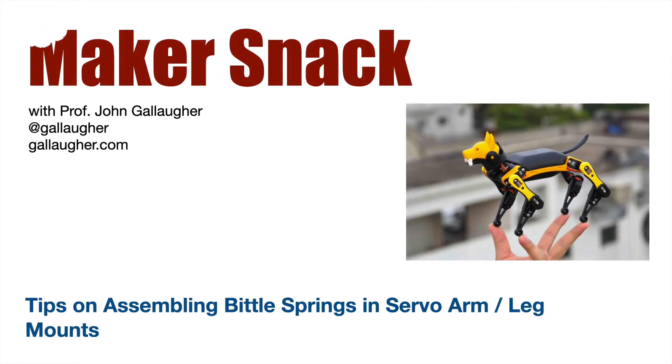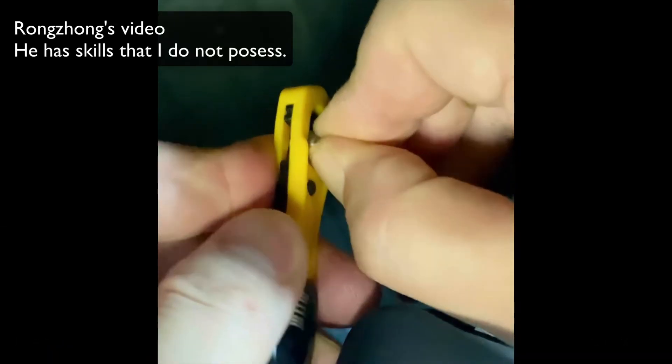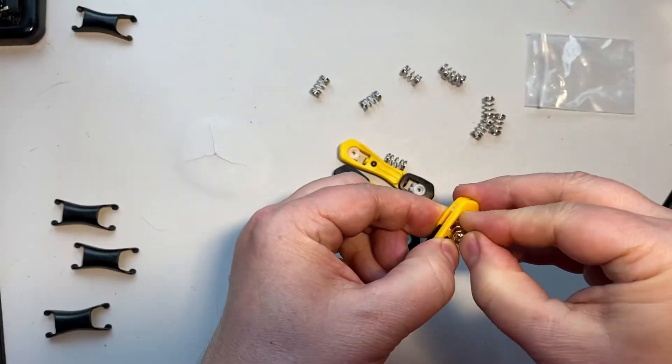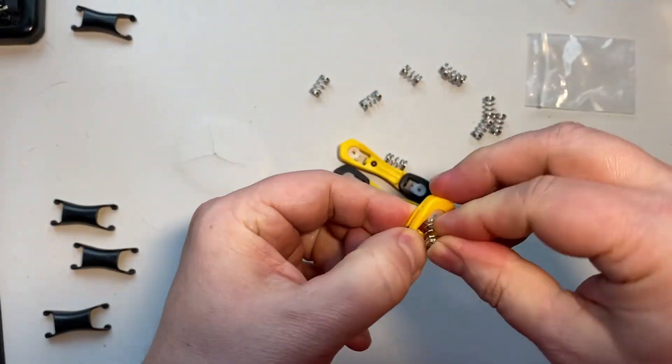Getting the springs inside the servo arms and legs is definitely the toughest part of the Biddle assembly. I spent over an hour trying to get the springs using just my fingers like Rongzhong shows in his videos, but no luck, and lots of time spent hunting down springs that bounced around the lab.